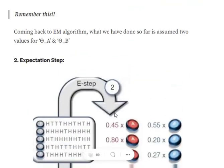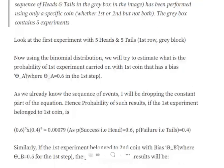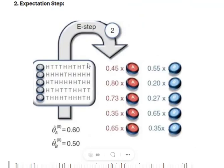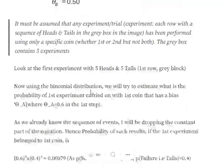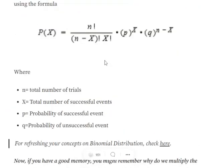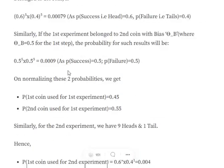So first, we set our estimated values: theta_a = 0.6 and theta_b = 0.5. Now looking at the first row of observations — heads, tails, tails, tails, heads, heads, tails, heads, tails, heads — we get five heads and five tails, so five successes and five failures. We want to figure out which coin this experiment belongs to by applying the binomial distribution and normalizing the two resulting probabilities.